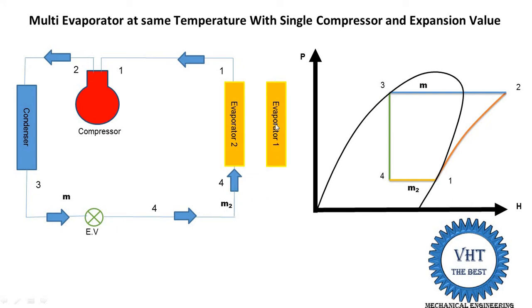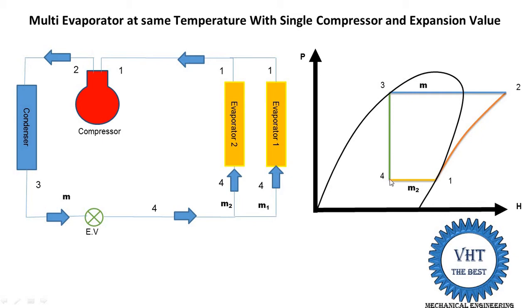Evaporator 1 receives mass m1 of the refrigerant, where m equals m1 plus m2. Evaporator 1 is also a heat exchanger and the process 4 to 1 takes place — the same as evaporator 2, since the temperature is the same. It absorbs heat and the phase converts to vapor, returning to the same line. All evaporators at the same temperature share the same line on the P-h diagram.